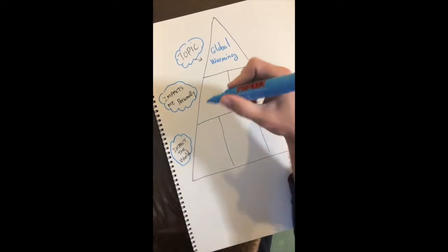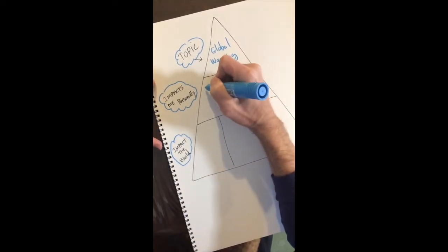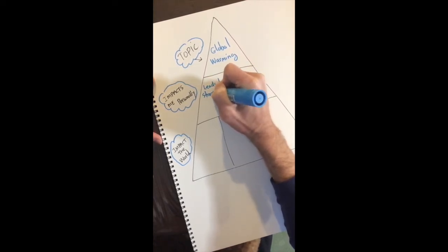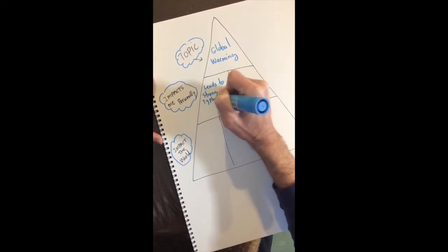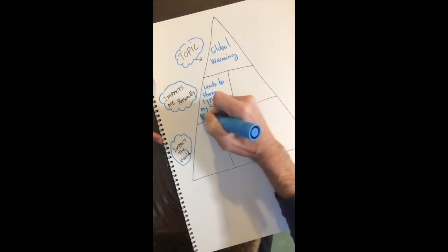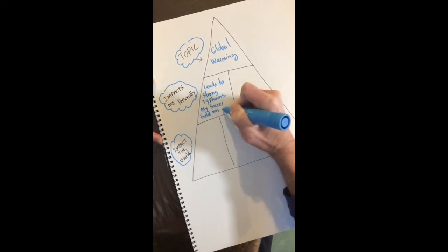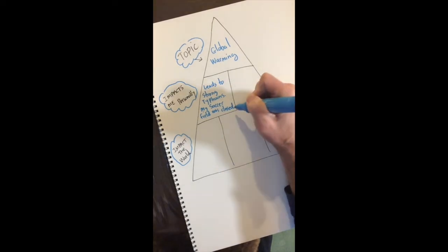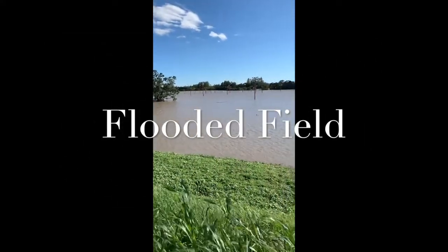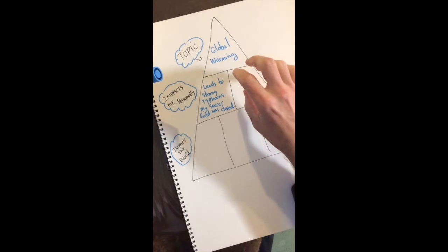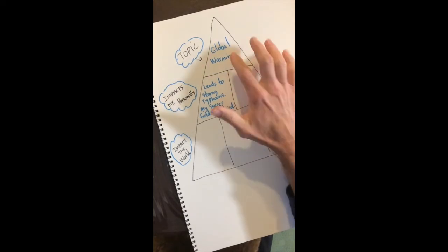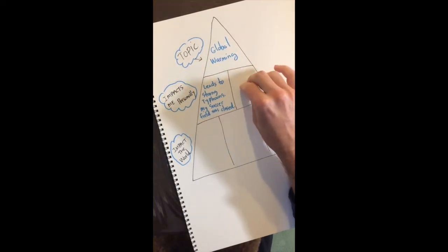It actually is still closed. So how it impacts me personally, I'm going to write: global warming leads to really strong typhoons, and that led to my soccer field being flooded and closed down, so we couldn't play there for a very long time. I'll share a picture of that in a few minutes. Then I want to think about another time or another way that global warming impacts me personally, so I have to make a connection to that topic.